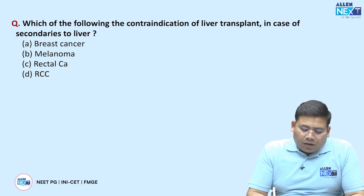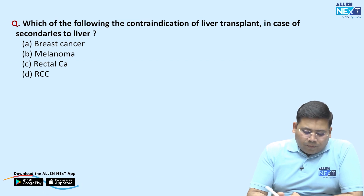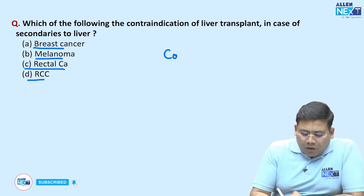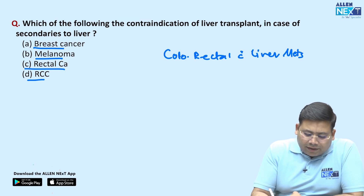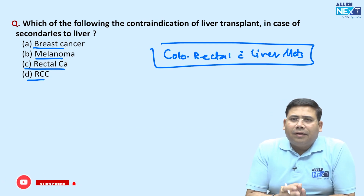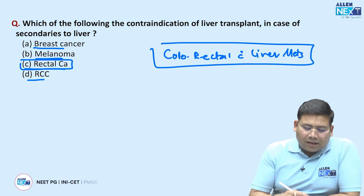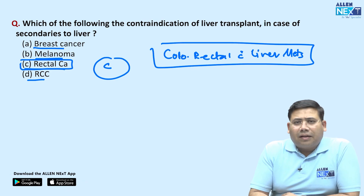Next, there was a question on which of the following is a contraindication for liver transplant in case of secondaries to the liver — breast cancer, melanoma, RCC, and rectal cancer. Remember, colorectal cancers with liver metastases is a known entity where transplant can be done. So rectal or colorectal cancer is the answer. C is the most probable answer here.